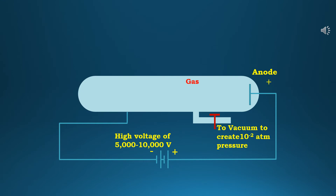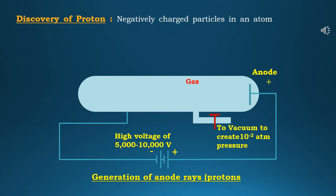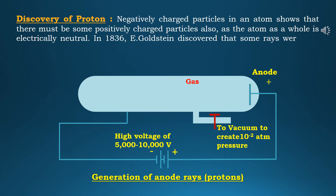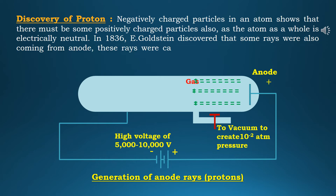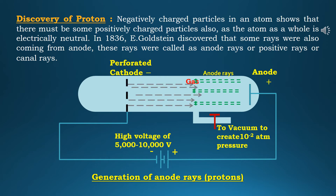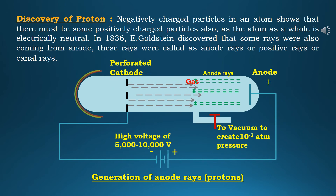After the discovery of the electron, let's discuss the discovery of the proton. The negatively charged particles in an atom show that there must be some positively charged particles also, as the atom as a whole is electrically neutral. In 1886, E. Goldstein discovered that some rays were also coming from the anode. These rays were called anode rays, positive rays, or canal rays. Goldstein made a small change — instead of a solid cathode, he used a perforated cathode through which the anode rays can pass and strike the other end, causing it to glow.